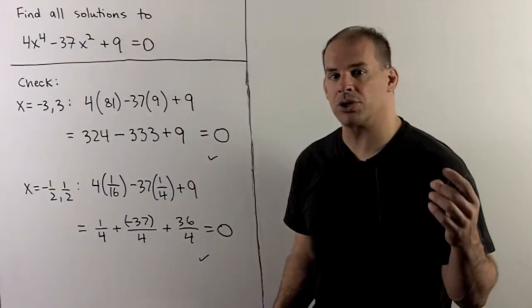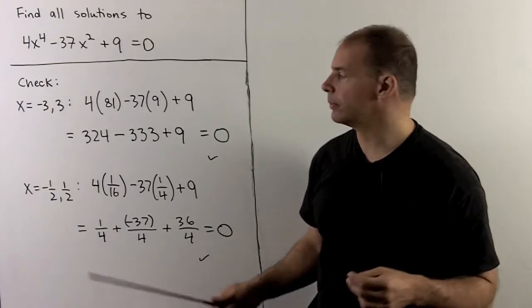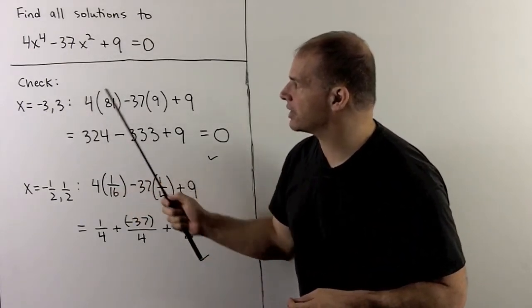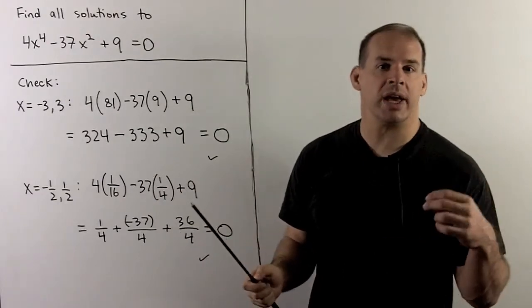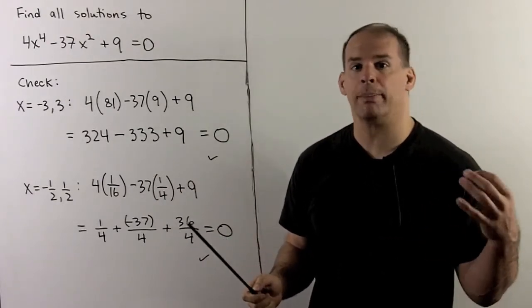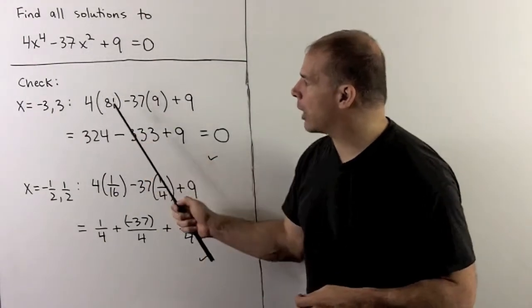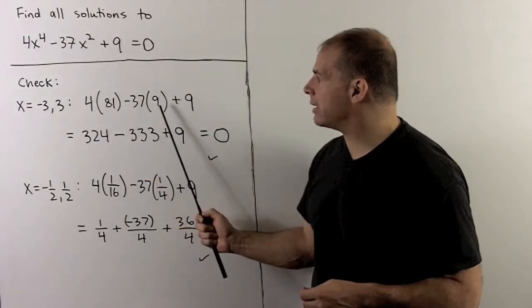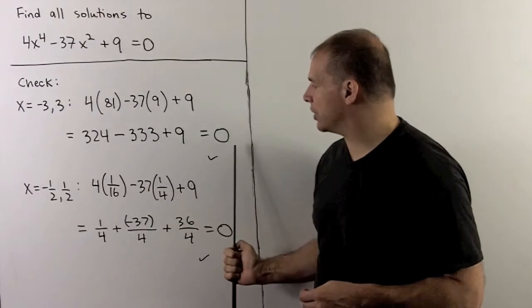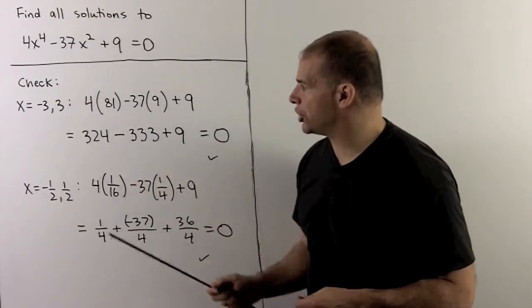Of course, we check our solutions in the original equation. Here, I can check minus 3 and 3 at the same time. I'll use x squared, x to the fourth power, so minus signs go away. 3 to the fourth power is 81, 3 squared is 9. When I work this out, we get a zero. So, these two solutions check.